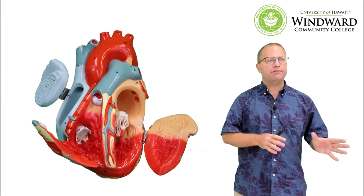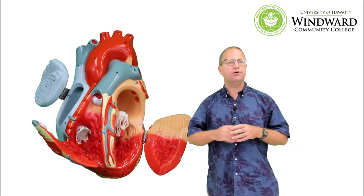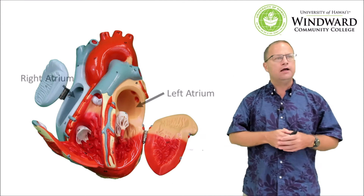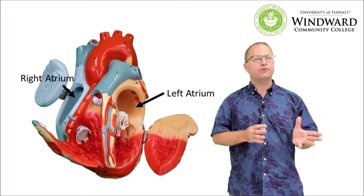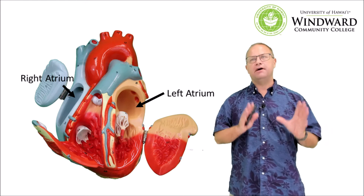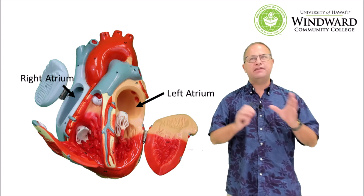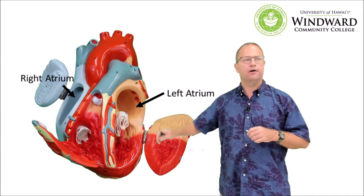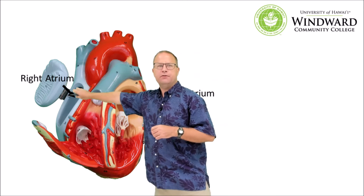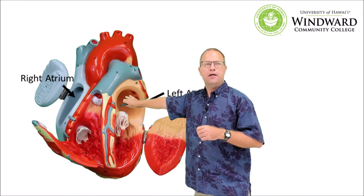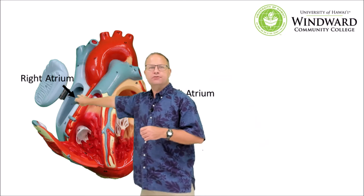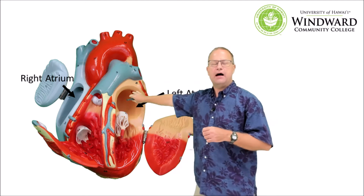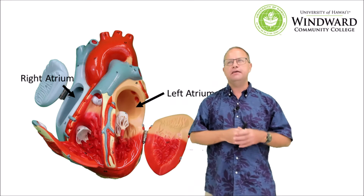Now let's take a look at the inside of the heart. This Denoyer Geppert heart is dissectable and lets us see all the different chambers. First, let's talk about the atria — the internal chambers above the ventricles. Their job is to pump blood into the ventricles, which doesn't require pumping very far. The right atrium gathers oxygen-poor blood from the vena cava, and the left atrium gathers oxygen-rich blood from the pulmonary veins.